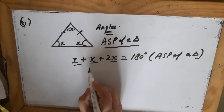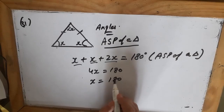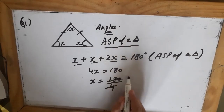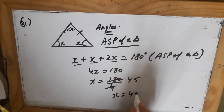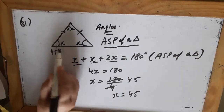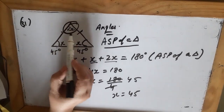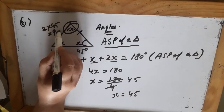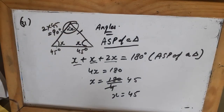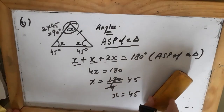The two base angles are x each and the vertex angle is 2x. So x plus x plus 2x equals 180. That gives 4x equals 180, so x equals 45. Each base angle is 45 degrees and the vertex angle is 2 multiplied by 45 equals 90 degrees. So two angles are 45 degrees each and one angle is 90 degrees — it is a right-angled triangle.